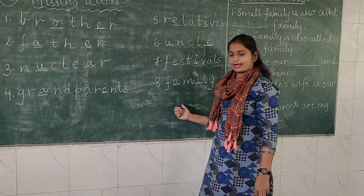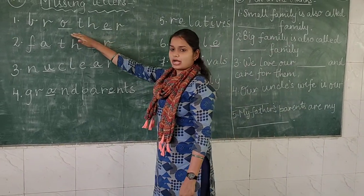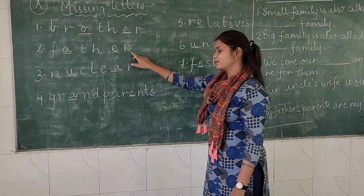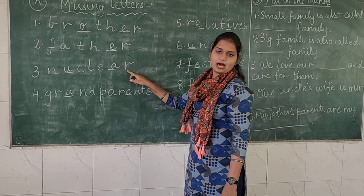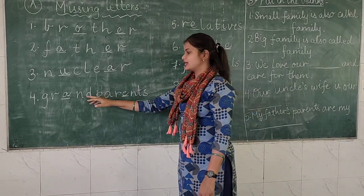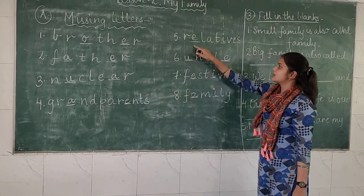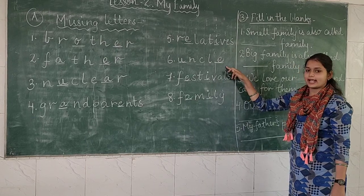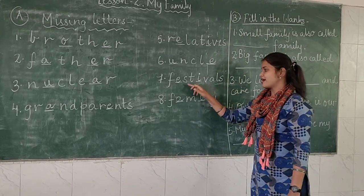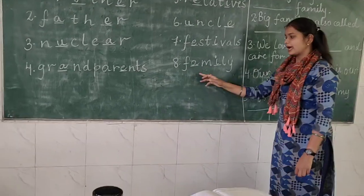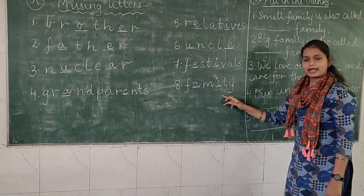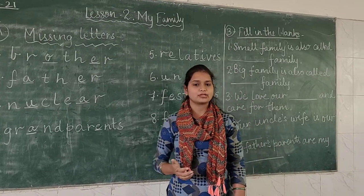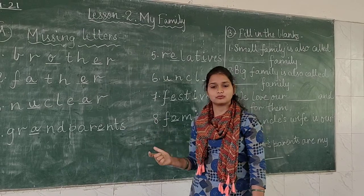Let me repeat all eight words once more — listen carefully. First: brother, B-R-O-T-H-E-R. Second: father, F-A-T-H-E-R. Third: nuclear, N-U-C-L-E-A-R. Fourth: grandparents, G-R-A-N-D-P-A-R-E-N-T-S. Fifth: relatives, R-E-L-A-T-I-V-E-S. Sixth: uncle, U-N-C-L-E. Seventh: festivals, F-E-S-T-I-V-A-L-S. And the eighth word: family, F-A-M-I-L-Y. I hope you all have understood this first exercise — missing letters — and there is no confusion in any spelling.